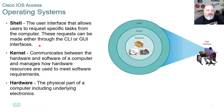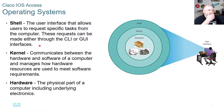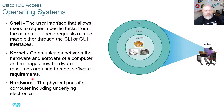Those requests can be made through either the command line or the GUI. The CLI — command line interface — is the text input you'll see. The GUI is your graphical user interface, where you see icons and different elements. You'll mostly be using the command line, or CLI, on routers and switches. The kernel communicates between the hardware and the software of a computer and manages how hardware resources are used to meet software requirements.